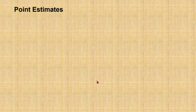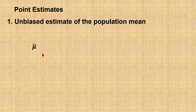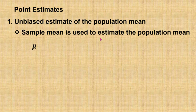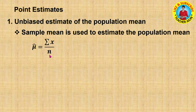In this video, I am going to discuss three types of point estimate. The first one is the unbiased estimate of the population mean, which is denoted as mu hat. To estimate the population mean, we use the sample mean, bar x, which is equal to the sum of the observations divided by the sample size. Therefore, the unbiased estimate of the population mean equals the sum of the observations divided by the sample size.